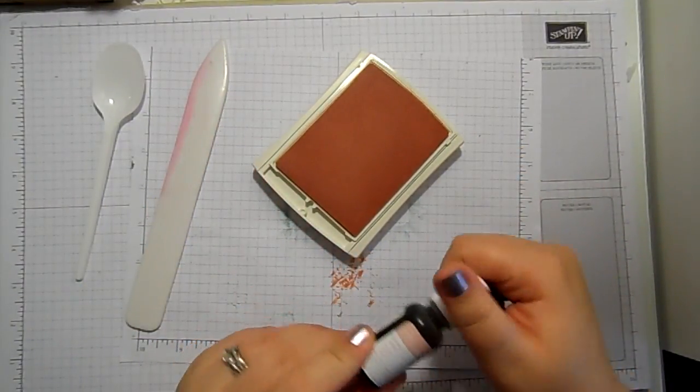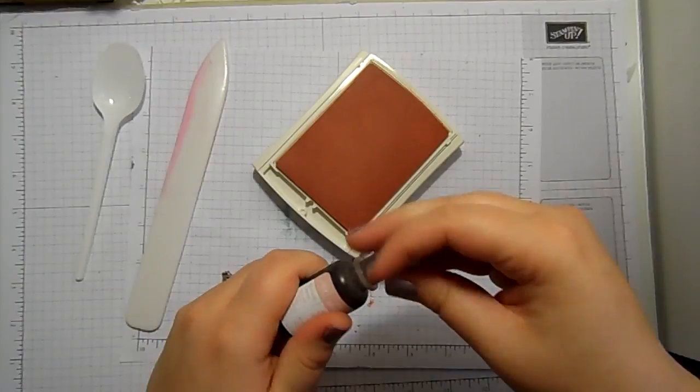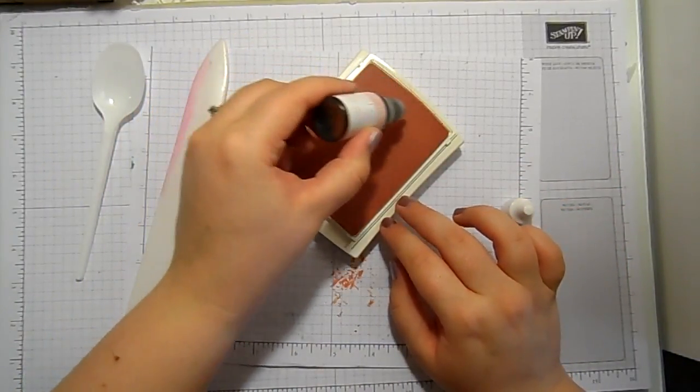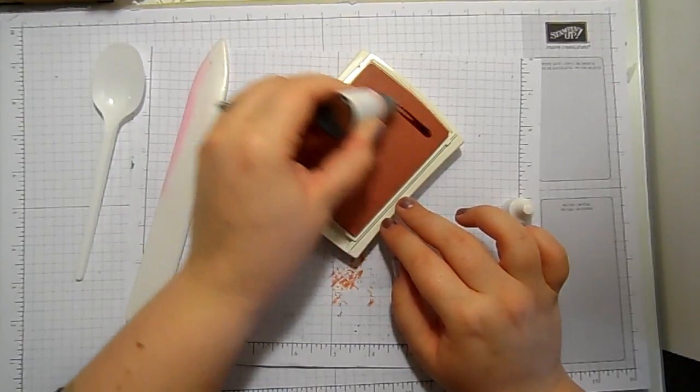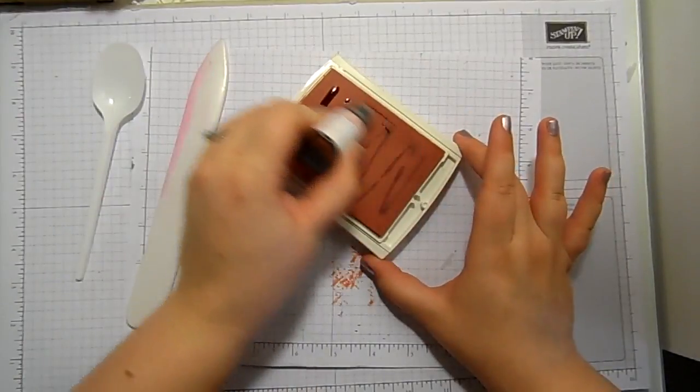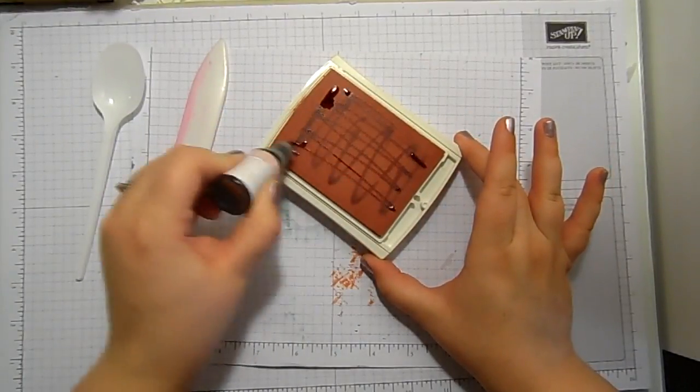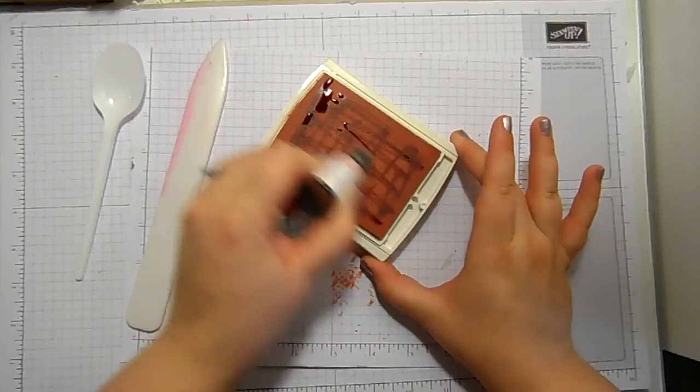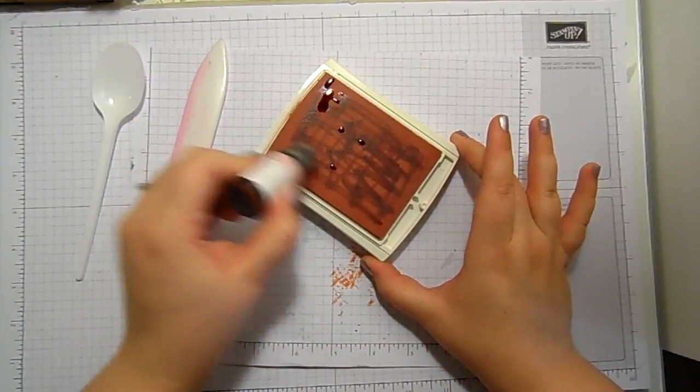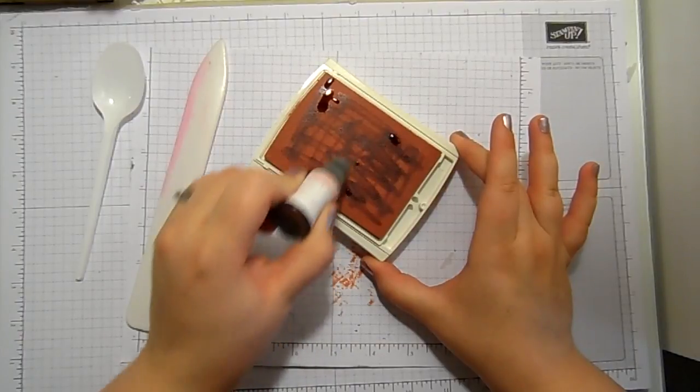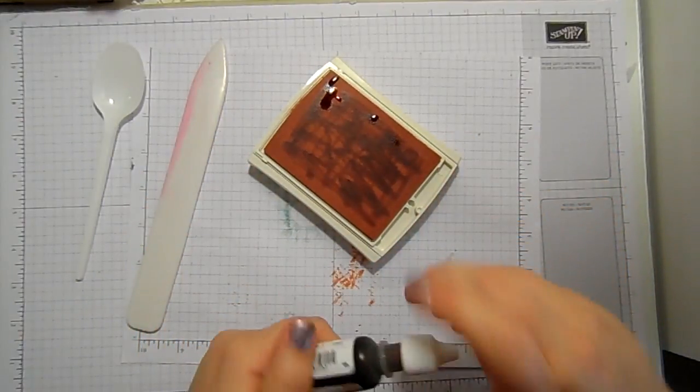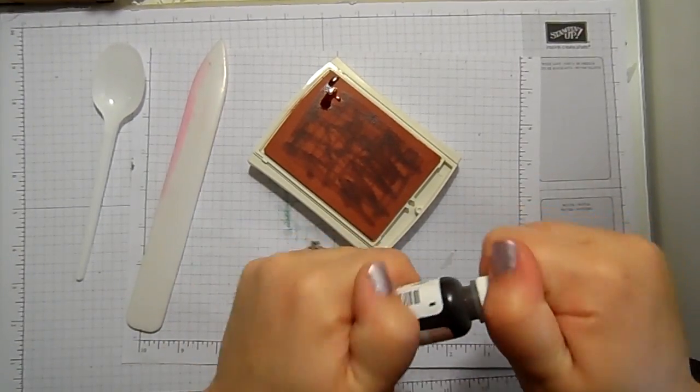I'm going to open that ink pad, lay it flat, take my re-inker, unscrew the top, and we're going to gently squeeze. We're not going to squeeze too hard because we don't want too much ink to fall out. We're just going to zigzag that ink both ways across our ink pad. Now you can see where it's soaking in and you can add more ink to those areas. As you can see, I ink more this side of my ink pad than the other.